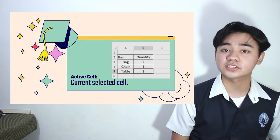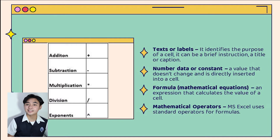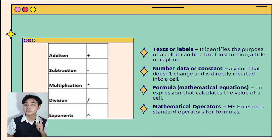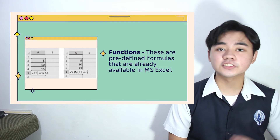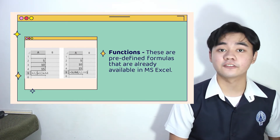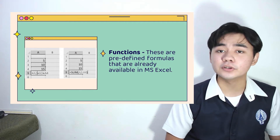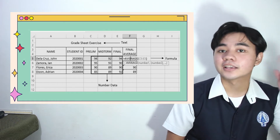Moving on to key terms: active cell simply refers to the cell that is currently selected. Text or labels identify the purpose of a cell. Number data or constant is a value that doesn't change and is directly inserted in a cell. Formula is a mathematical equation that calculates cell values. Mathematical operators are the basic operations in math. Functions are predefined formulas available in Excel — instead of typing manually, you can just type SUM and input a cell reference.